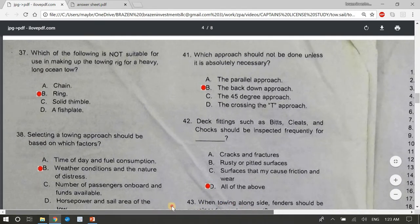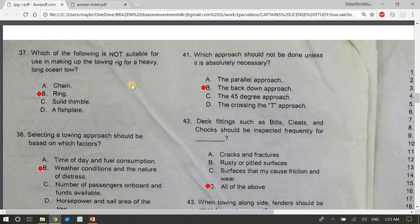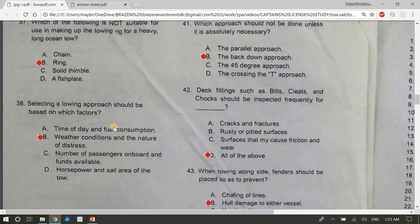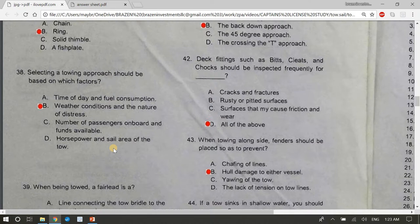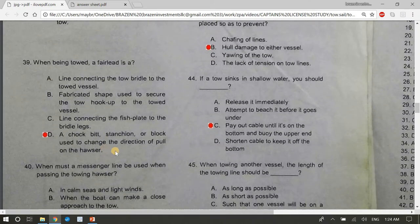37, which of the following is not suitable for use in making up the towing rig for a heavy ocean tow? The answer is B, ring. 38, selecting a towing approach should be based on which factors? The answer is B, weather conditions and the nature of distress. 39, when being towed, a fairlead is D, a chalk bit, stanchion, or block used to change the direction of pull on the hawser.